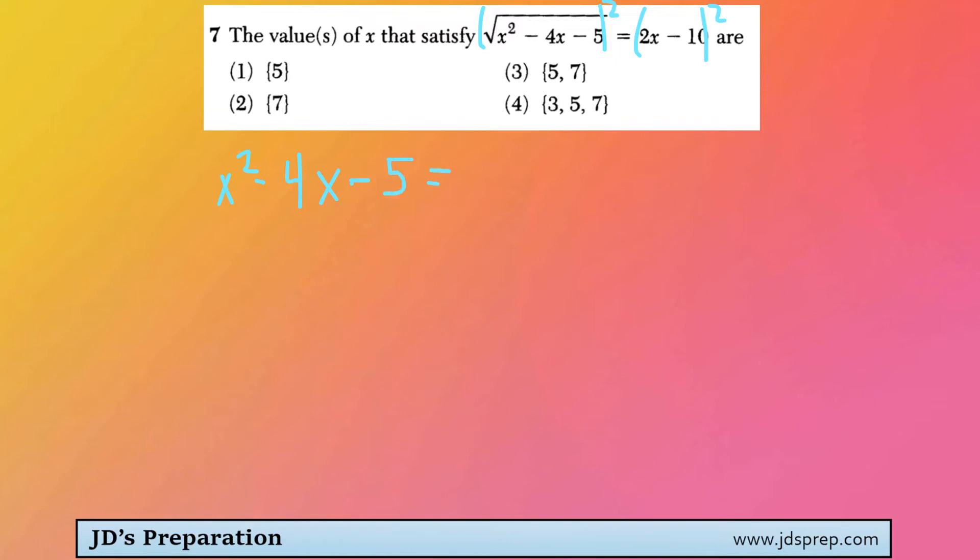And on the right-hand side, if we expand 2x minus 10 squared, we will get 4x squared minus 40x, and I'm getting that by just combining negative 20x and negative 20x again, plus 100.